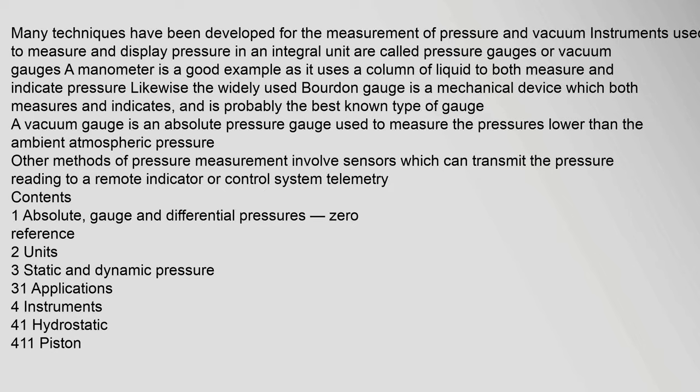Many techniques have been developed for the measurement of pressure. Instruments used to measure and display pressure in an integral unit are called pressure gauges or vacuum gauges. A manometer is a good example, as it uses a column of liquid to both measure and indicate pressure. The widely used Bourdon gauge is a mechanical device which both measures and indicates, and is probably the best known type of gauge. A vacuum gauge is an absolute pressure gauge used to measure pressures lower than the ambient atmospheric pressure.